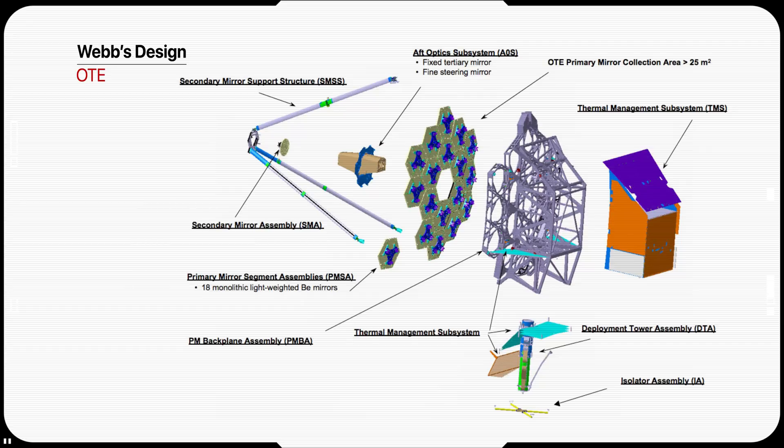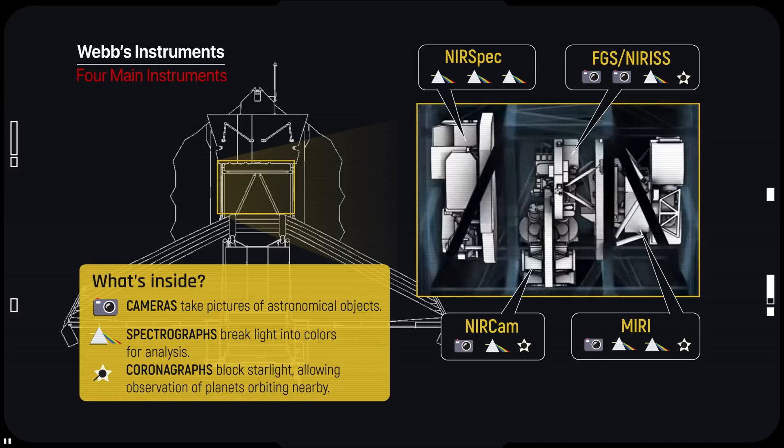The science module houses the four main instruments. The instruments primarily have two functions: taking images of scientific targets and breaking down light into separate wavelengths to determine the physical and chemical properties of various forms of cosmic matter.